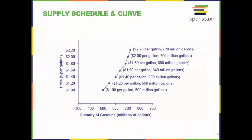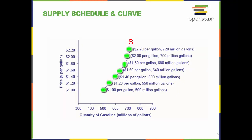The supply schedule is the table that shows quantity supplied of gasoline at each price. As price rises, quantity supplied also increases, and vice versa. The supply curve S is created by graphing the points from the supply schedule and then connecting them. The upward slope of the supply curve illustrates the law of supply — that a higher price leads to a higher quantity supplied, and vice versa.